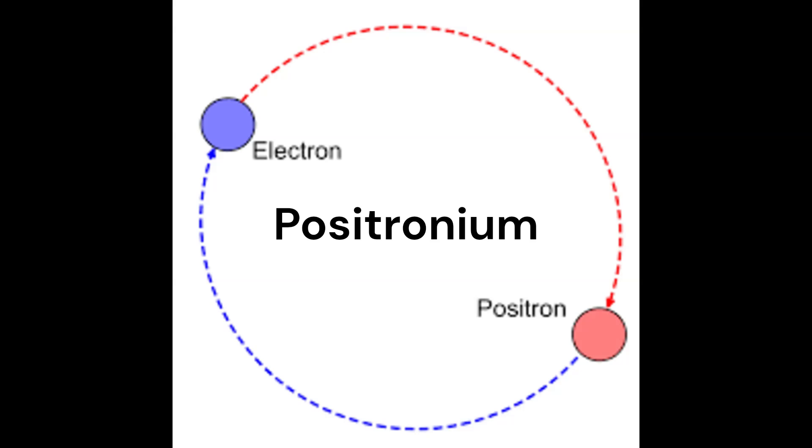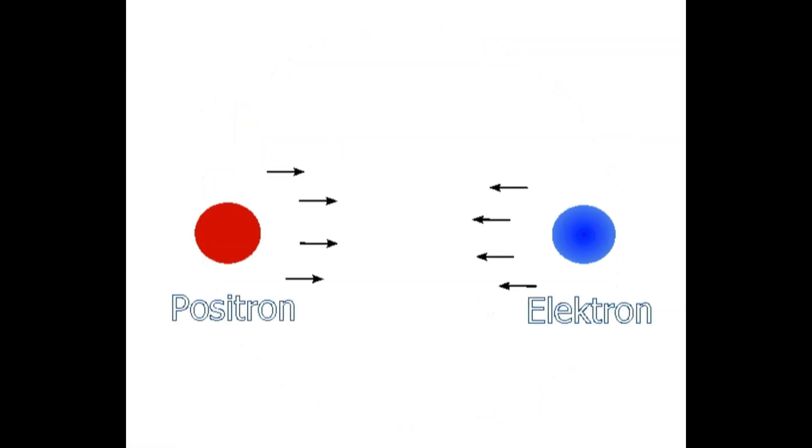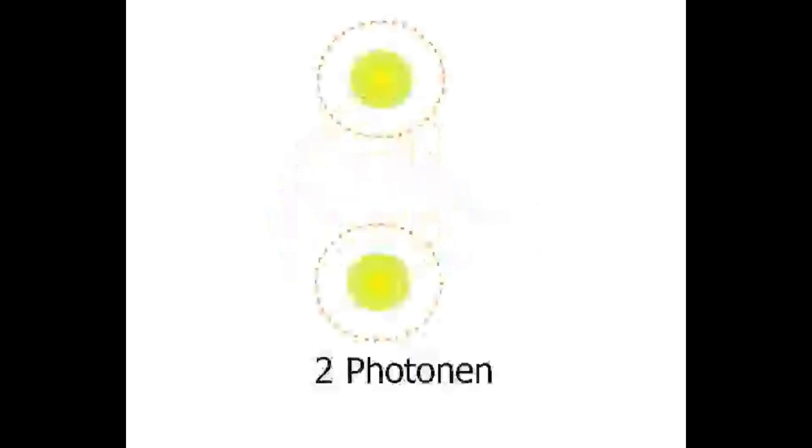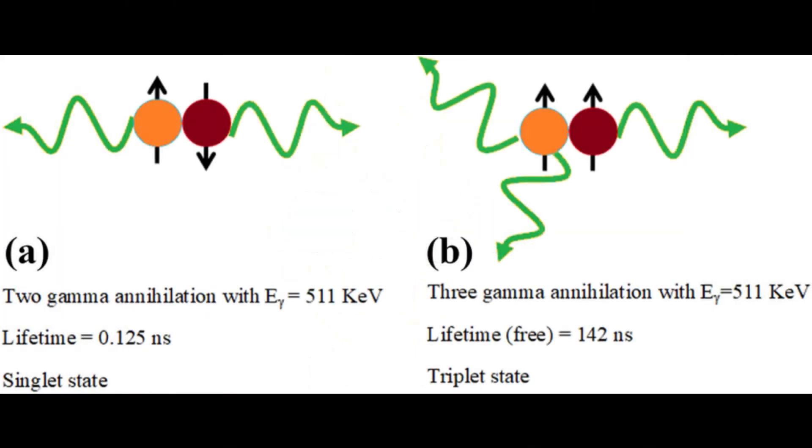The positronium is very unstable with electron and positron orbiting around each other without a nucleus and wanting to annihilate one another as soon as they get close, releasing 2 or 3 photons depending on their spin states.